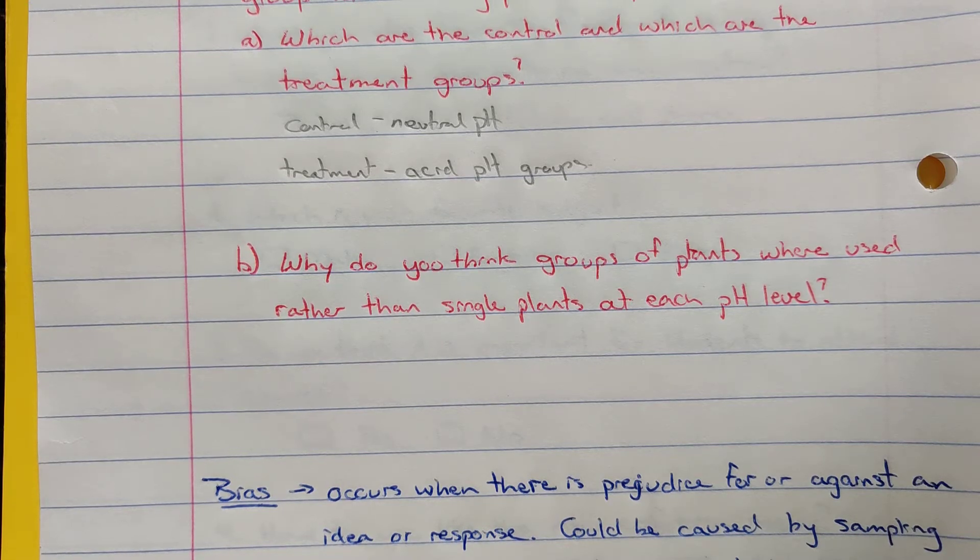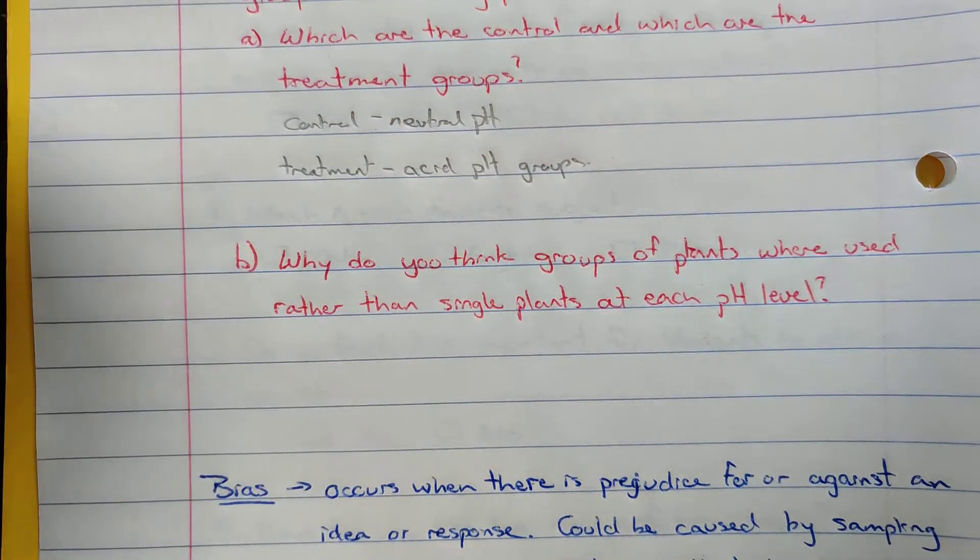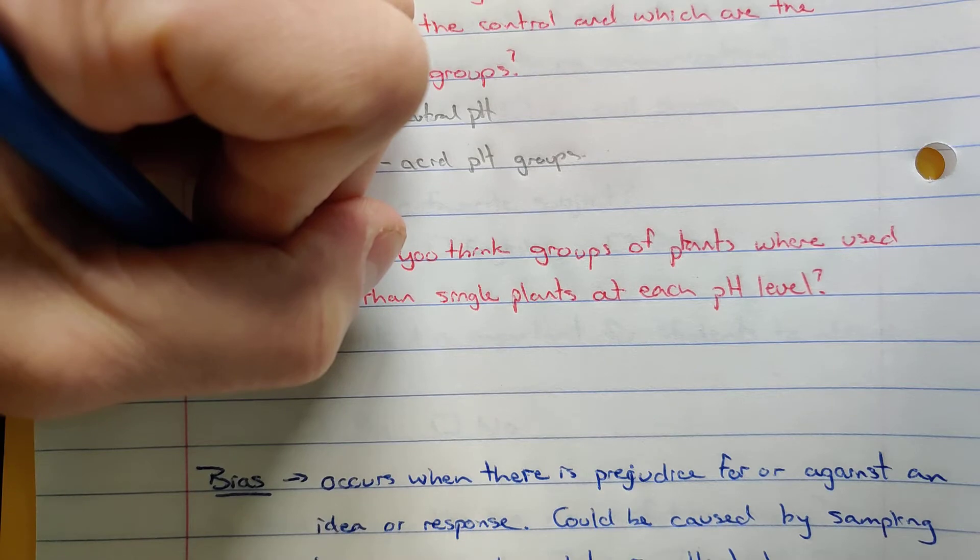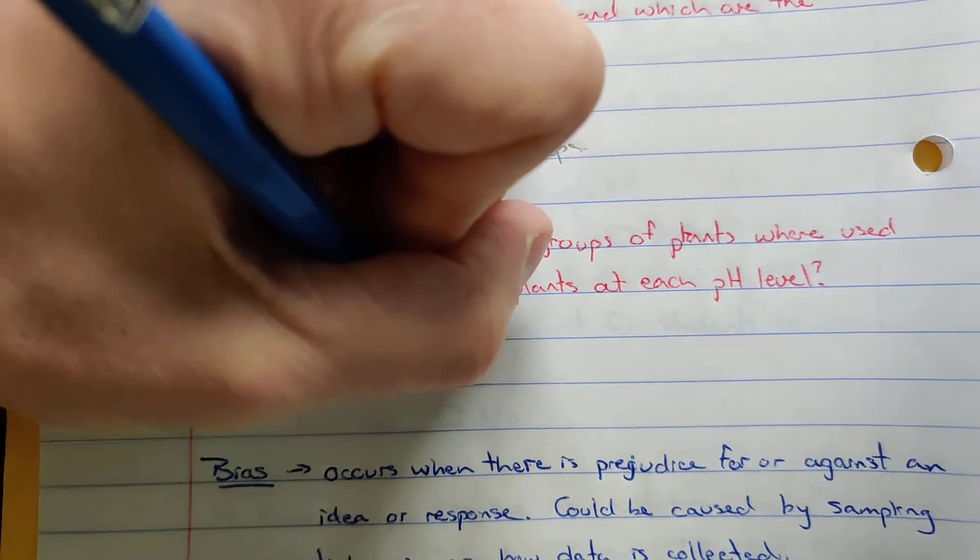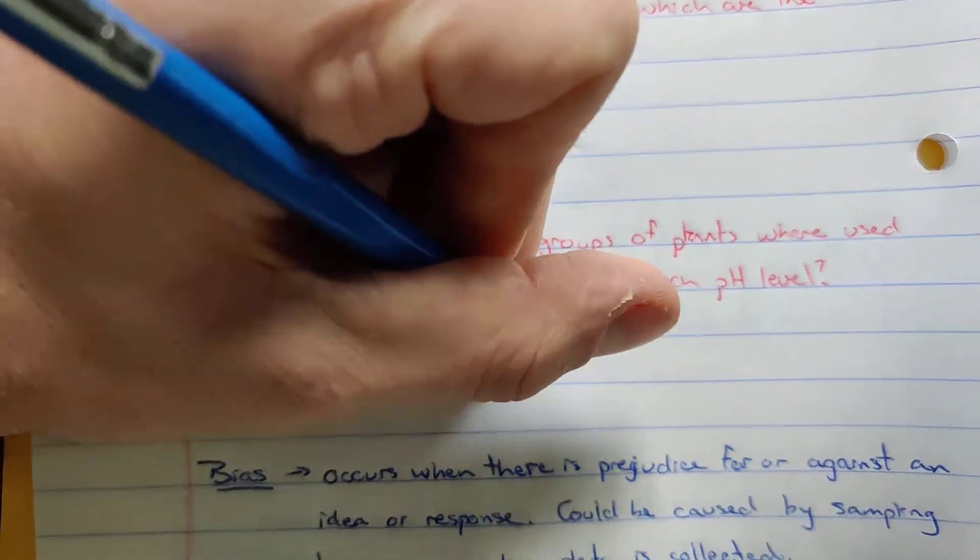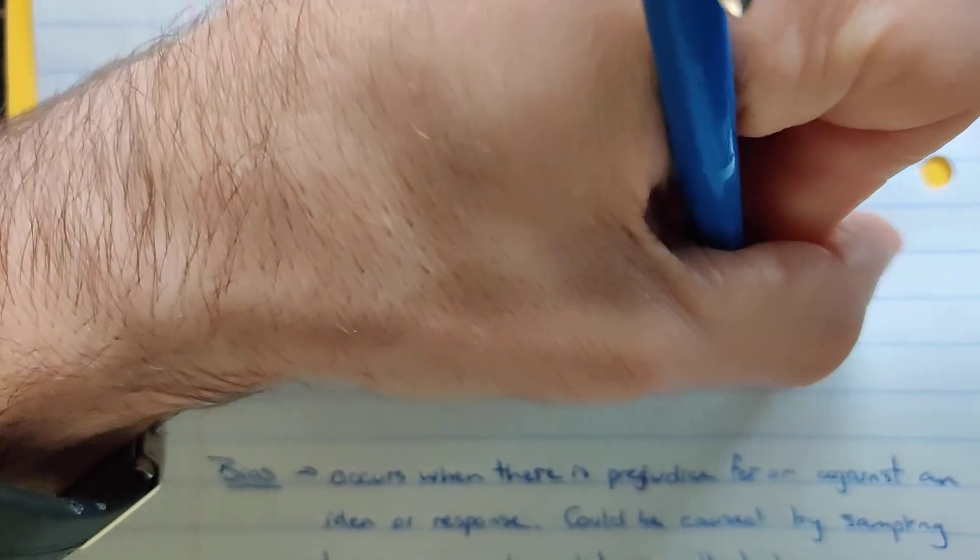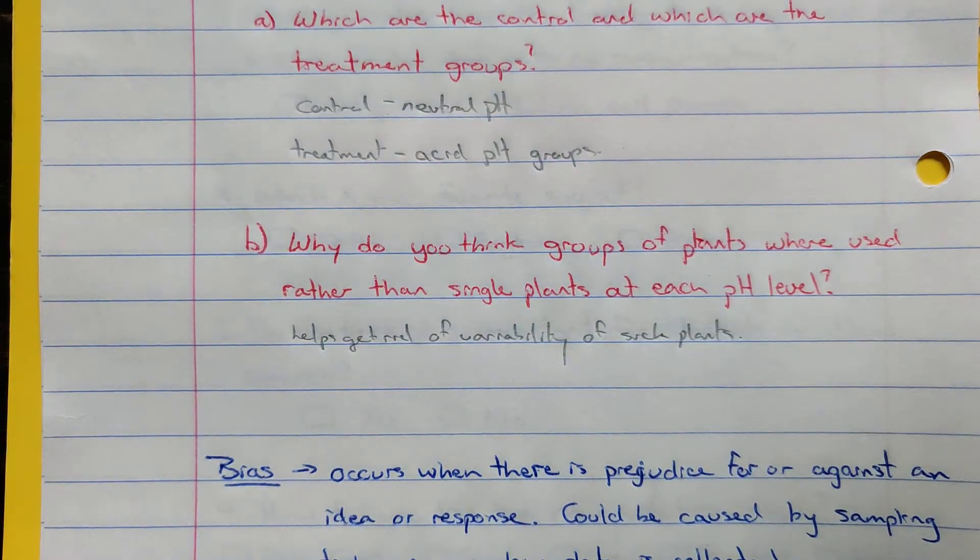If we just happened to have one sick plant at a certain pH that had some sort of defect in it, it would possibly skew a result to say that specific acidity causes this where the others don't, and it could just be because that one plant had some sort of issue. So having multiple plants allows us to eliminate that, helps us control that concern, helps get rid of the variability of sick plants.